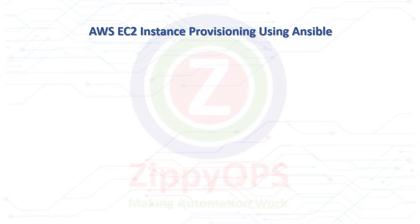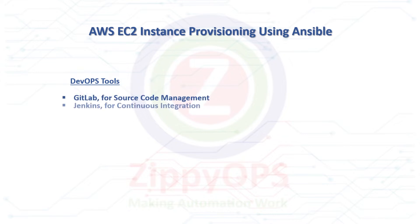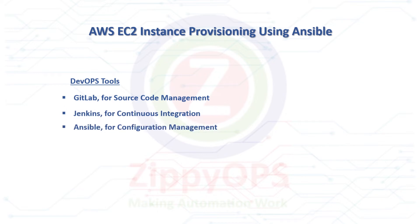The complete process is orchestrated through the Jenkins pipeline. The tools used in this AWS EC2 Instance Provisioning are: GitLab for source code management, Jenkins for continuous integration, Ansible for configuration management, and AWS for the secure cloud service platform.